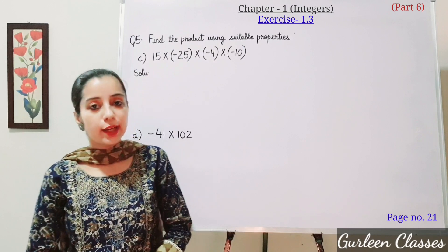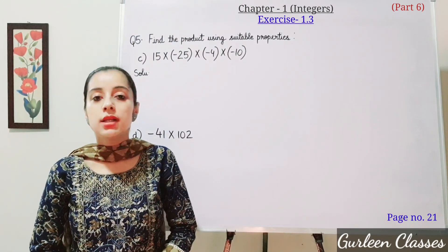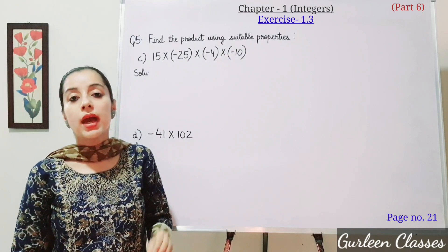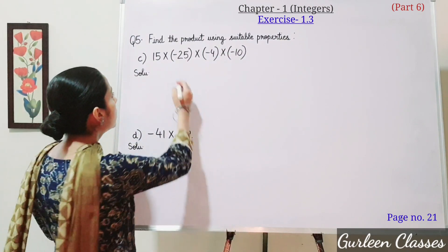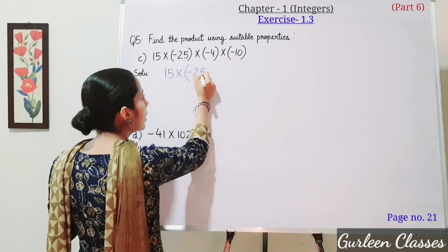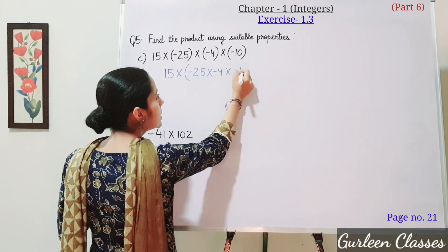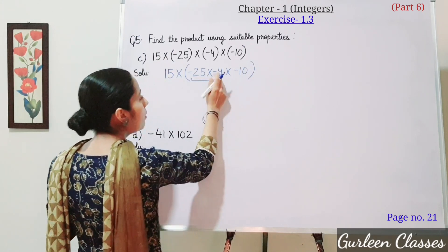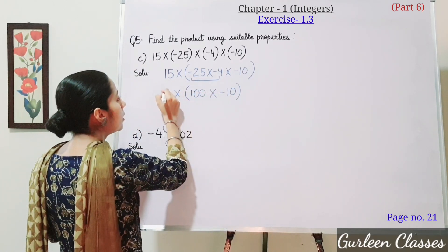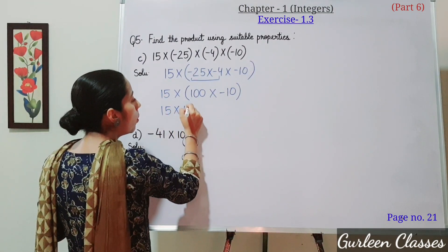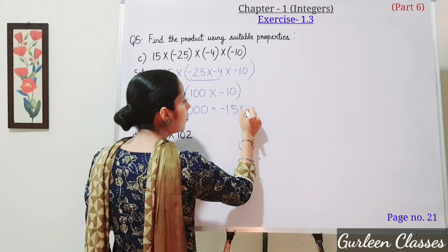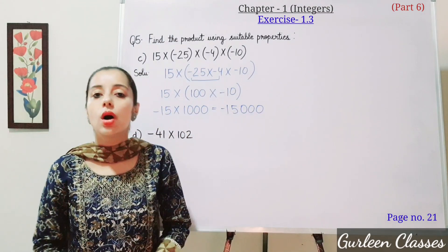Part C: 15 into minus 25 into minus 4 into minus 10. We take minus 25, minus 4, and minus 10 together to reduce calculation. Multiplying minus 25 into minus 4 gives 100, then 100 into minus 10 gives minus 1000. Outside we have 15, so 15 into minus 1000 gives minus 15000. The property used here is commutative property.